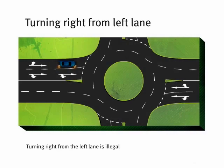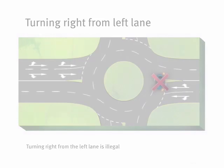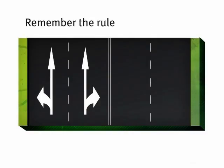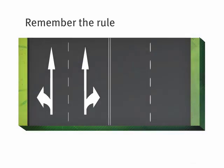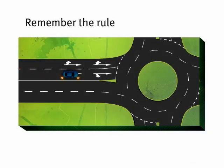So, if the arrows on the road don't indicate otherwise, turning right from the left-hand lane is illegal. Remember the rule: unless road markings indicate otherwise, you must be in the right lane to turn right on a roundabout.